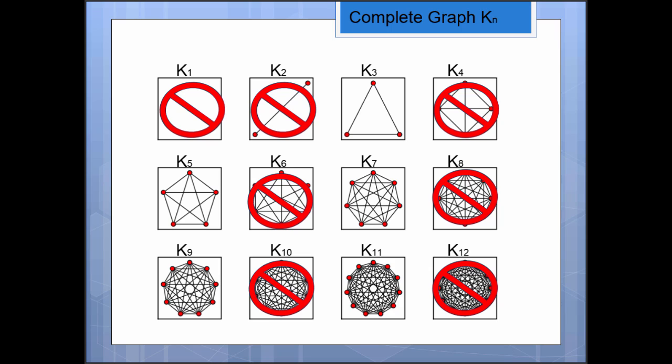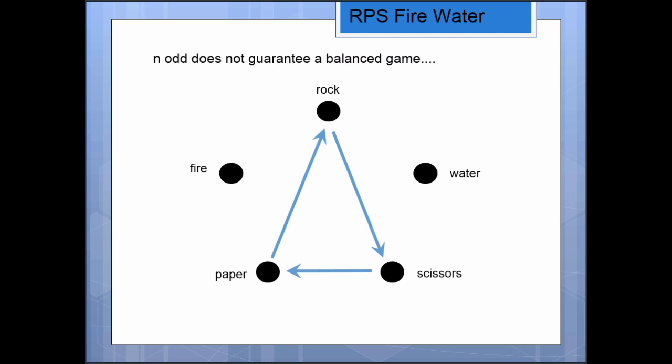So now you're thinking, excellent, I see K3, which was easy. K5 must be what we want to look at next. And in fact, if you use K5 and you add direction, it doesn't necessarily guarantee you're going to end up with a balanced game. You can, but it doesn't guarantee it.